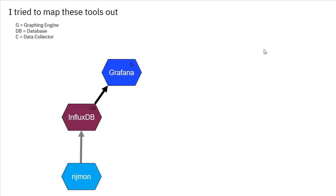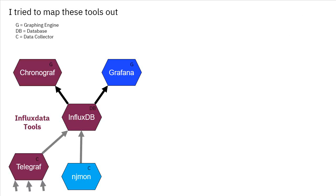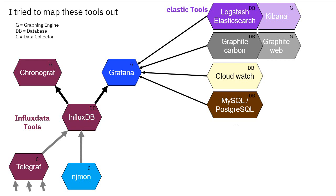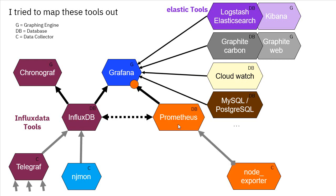When I started investigating these tools, I found they had quite a few relationships between them. njmon talks to InfluxDB and Grafana does the graphics. InfluxDB comes from a company called InfluxData, which has their own data collector called Telegraf — a pretty powerful tool — and Chronograf, which does their graphing. InfluxDB can talk to both graphing engines without any problems. Grafana has lots of data sources it will talk to, including relational databases, Graphite, and the Elastic tools. Graphite and Grafana actually share a common source code heritage. Prometheus, which was tricky for njmon's push mode, can still be used alongside InfluxDB in Grafana — Grafana can talk to both simultaneously.